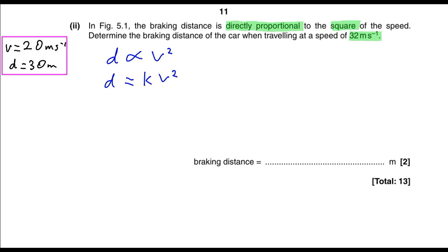That gives us that the braking distance is equal to a constant which shows direct proportion, times the square of the speed. We can find this constant using the information that we already have. Putting the values from the previous question, we have 30 equals k times 20 squared.